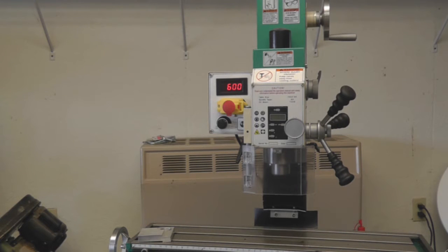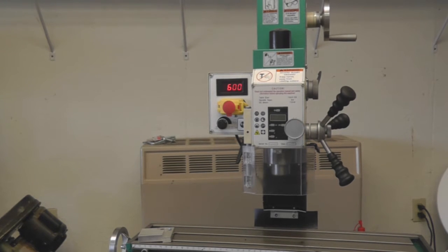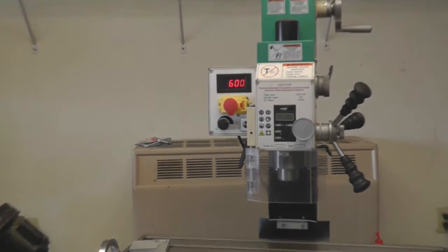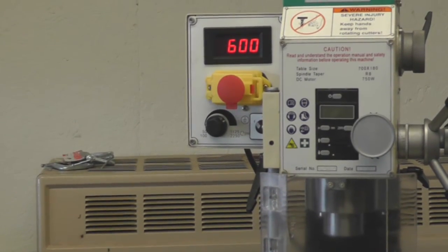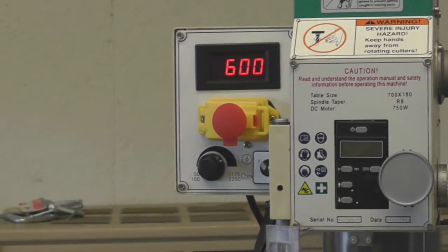To start the break-in process of the G0704 milling machine, the first thing that you do is put the machine into forward and low speed and turn up the knob to 600 RPM, which is what we're running at right now. You can see that on the digital readout.